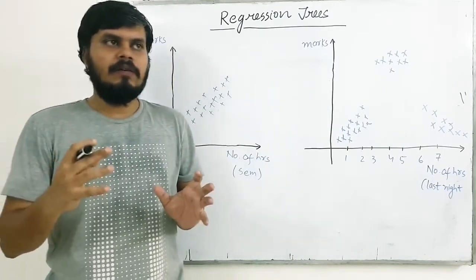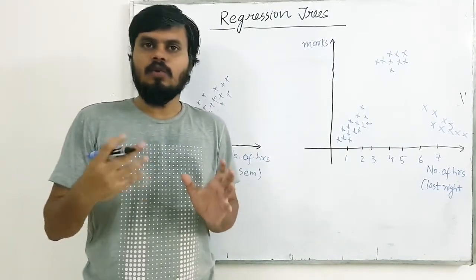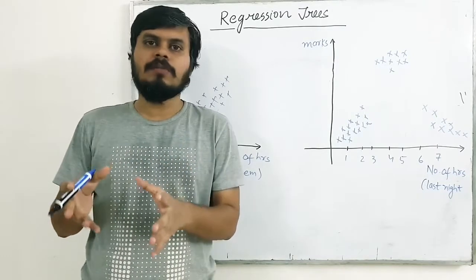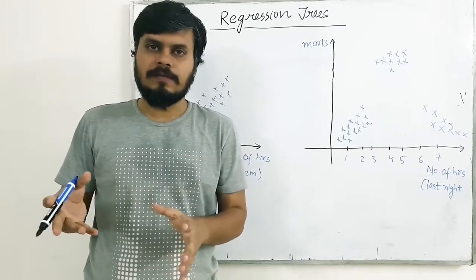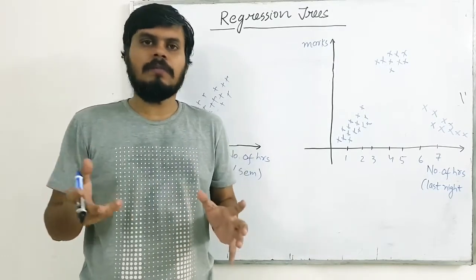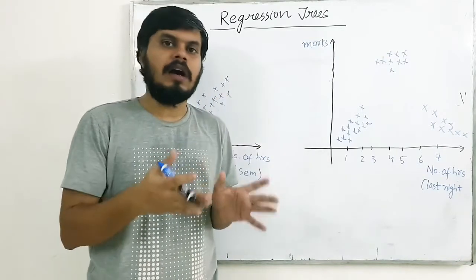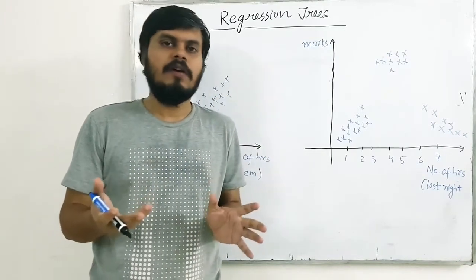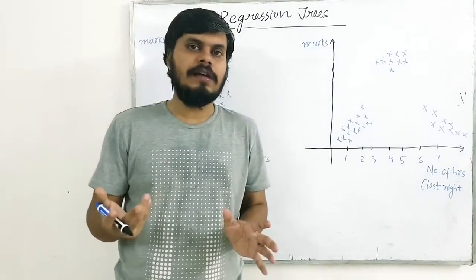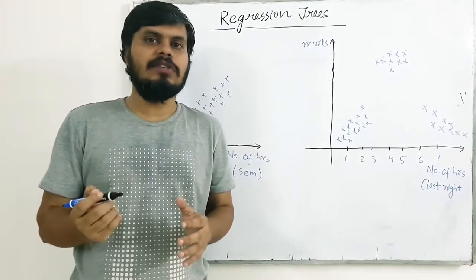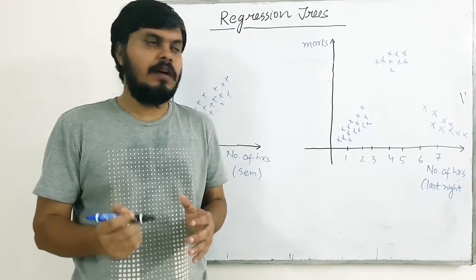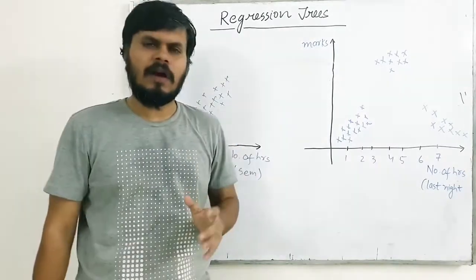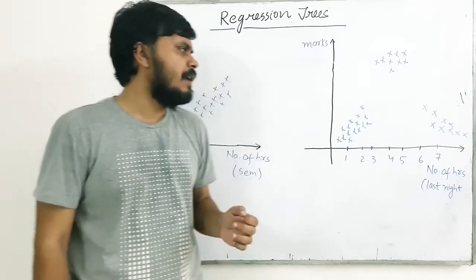But what you can do is, you can apply decision trees on top of regression problems as well. If you have data where the target label is numerical, you can apply decision trees there. We call it a regression tree — it's a very good concept.